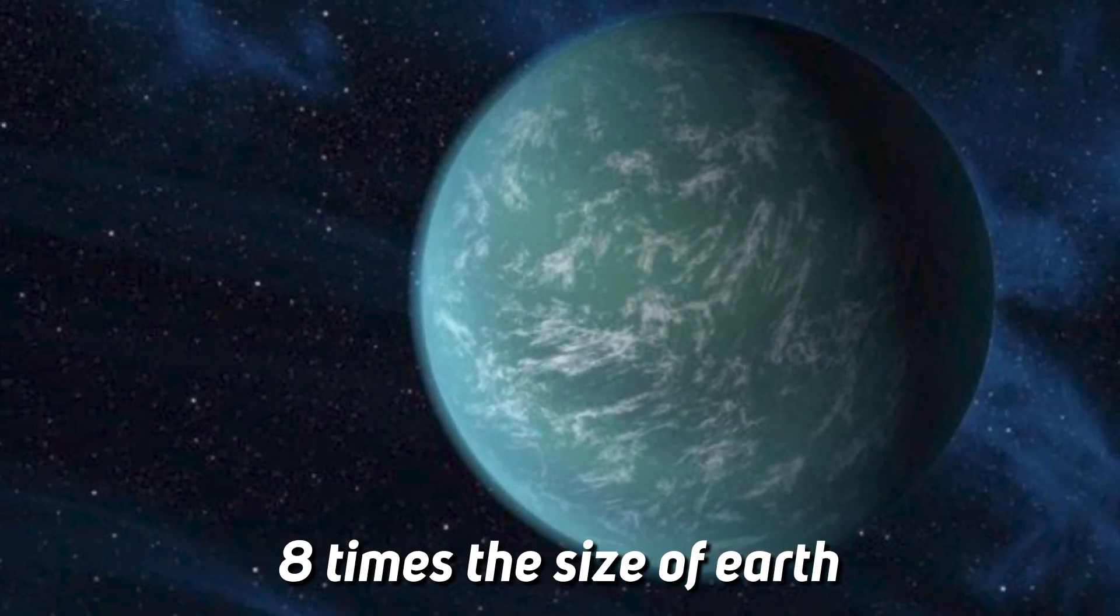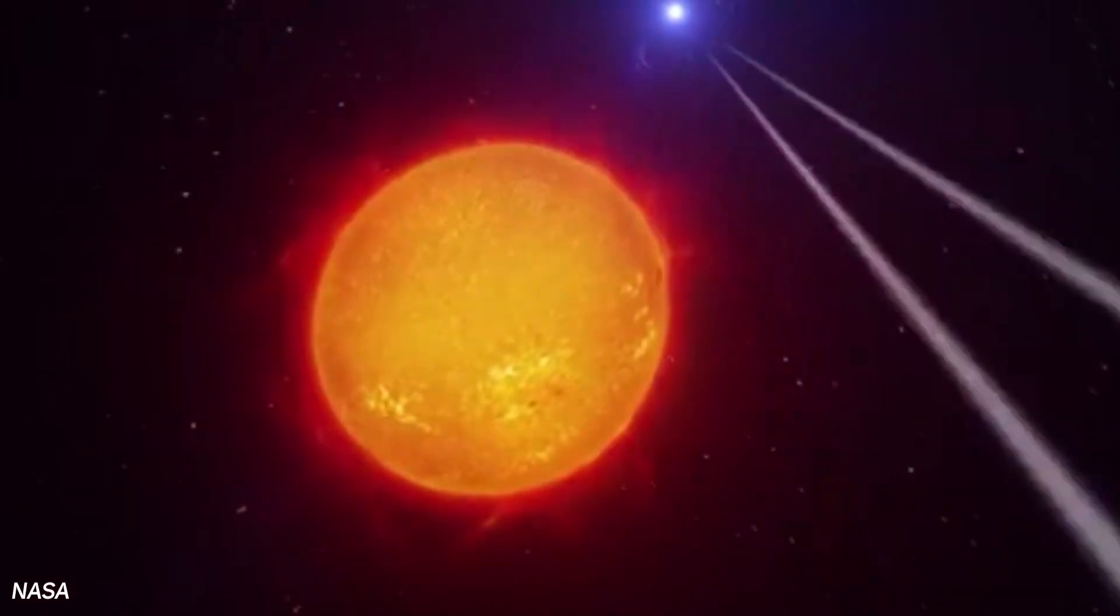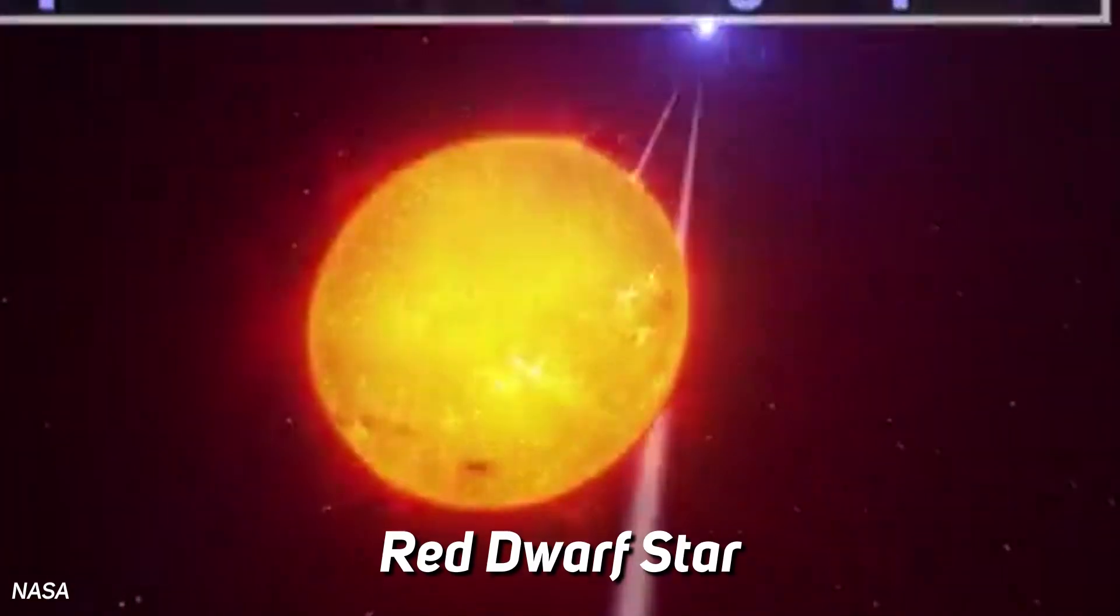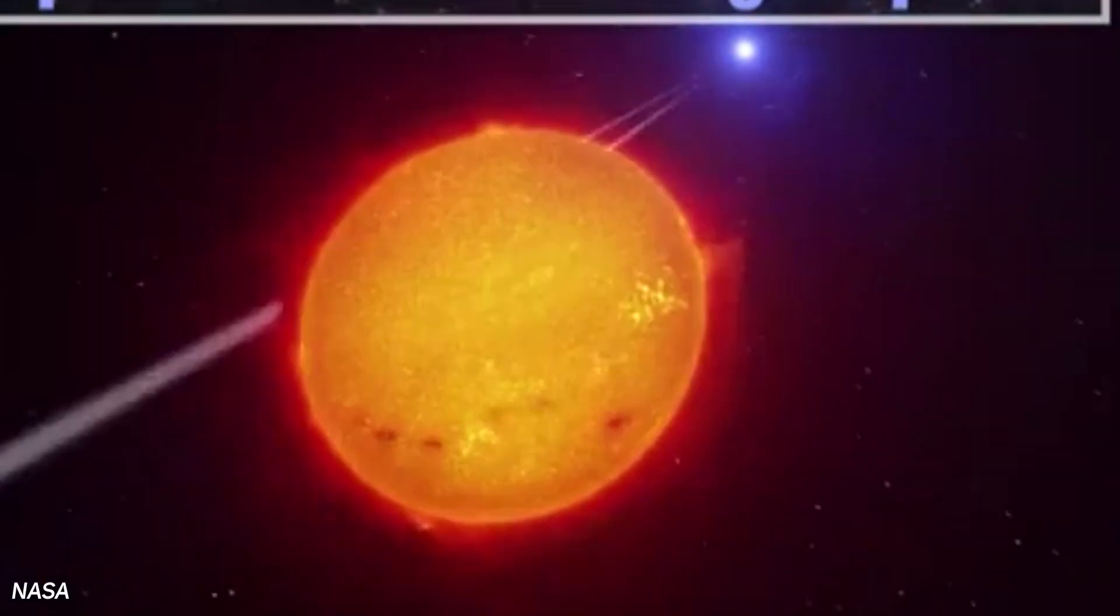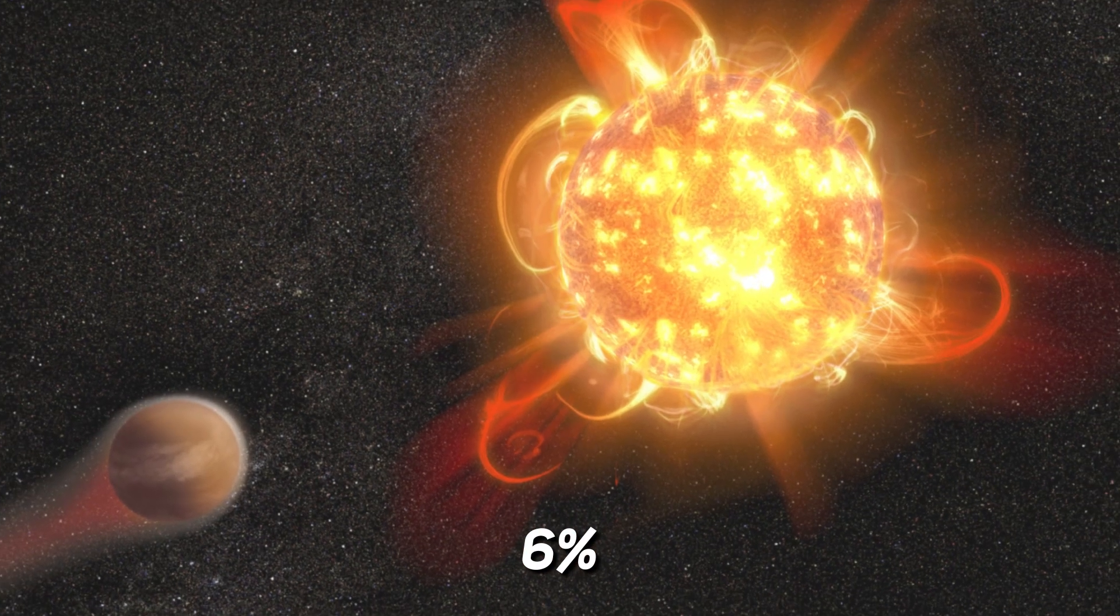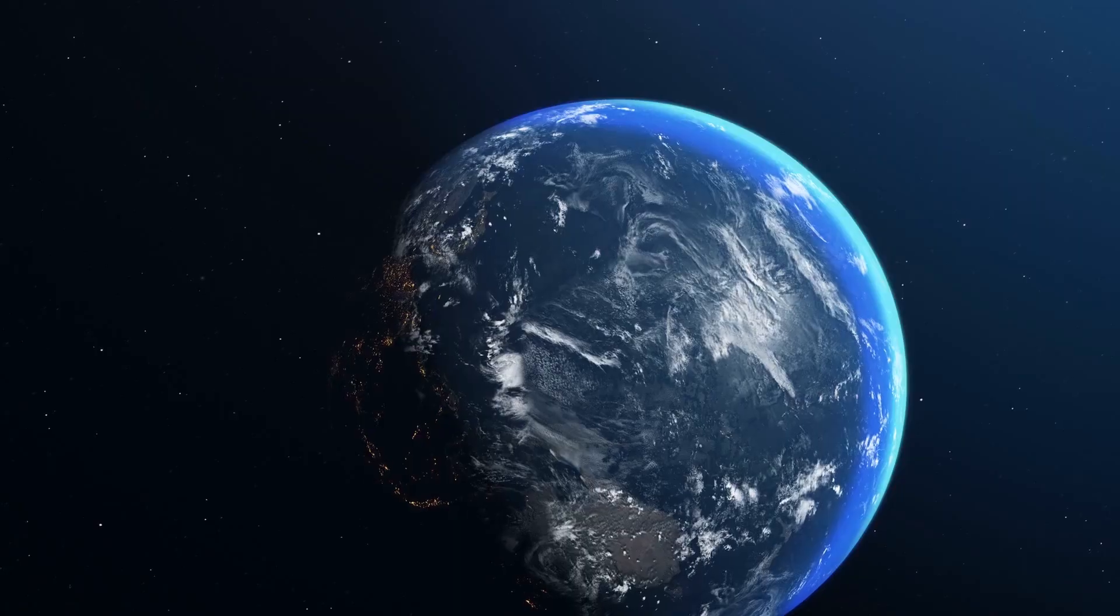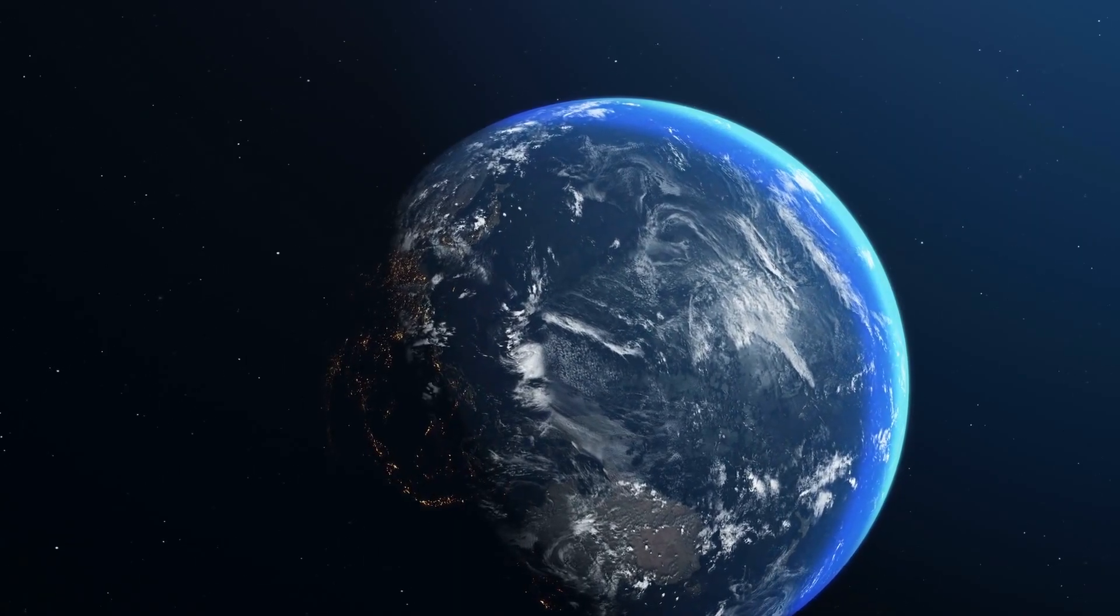K2-18b is about eight times the size of Earth and orbits a red dwarf star. A red dwarf star, in contrast to our Sun, is a cooler star which can be found commonly in the Milky Way. Astronomers have estimated from the data relayed by Kepler that almost 6% of planets located in the habitable zone have a red dwarf star. The planet in question, K2-18b,